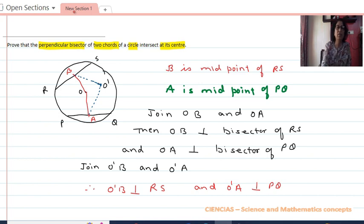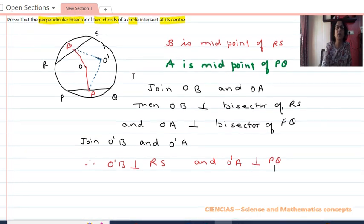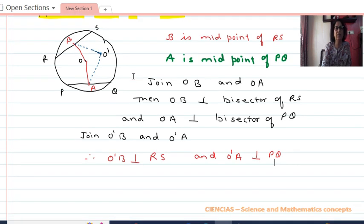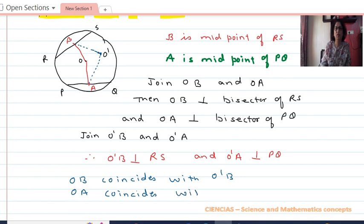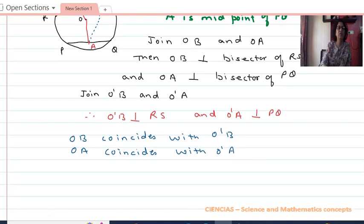But for a single chord there cannot be two perpendicular bisectors. Therefore, we can say that if these points coincide then point O and O dash should be same.